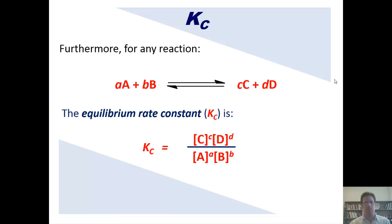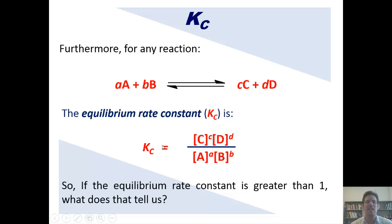So now I'm going to ask you a question. If the equilibrium rate constant is greater than one, in other words, if Kc here is much larger than one, what does that tell us? I'll let you pause this here and think about it before I tell you the answer. Okay, here's the answer. If Kc is much larger than one, that tells us that at equilibrium the concentrations of C and D are much larger than the concentrations of A and B. Hence, at equilibrium in that circumstance, the amounts of C and D would be much greater than the amounts of A and B, and equilibrium would favor concentration-wise products over reactants.